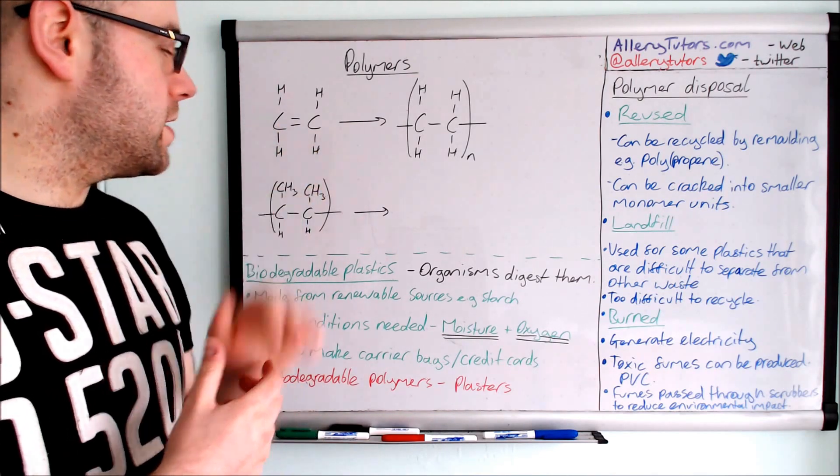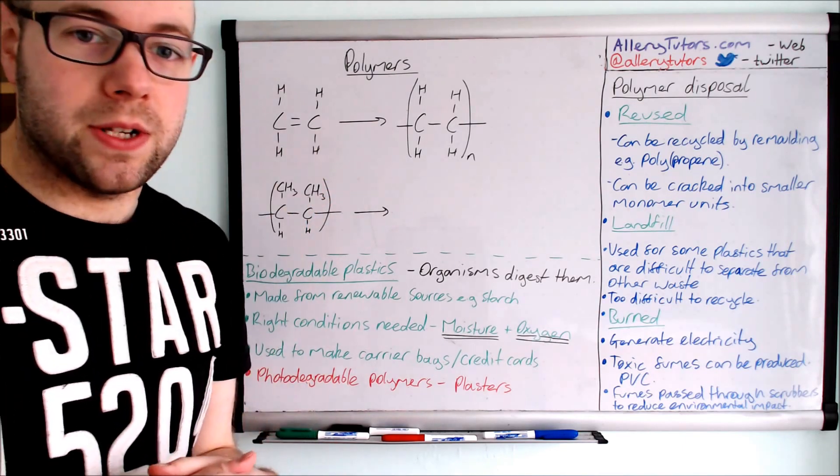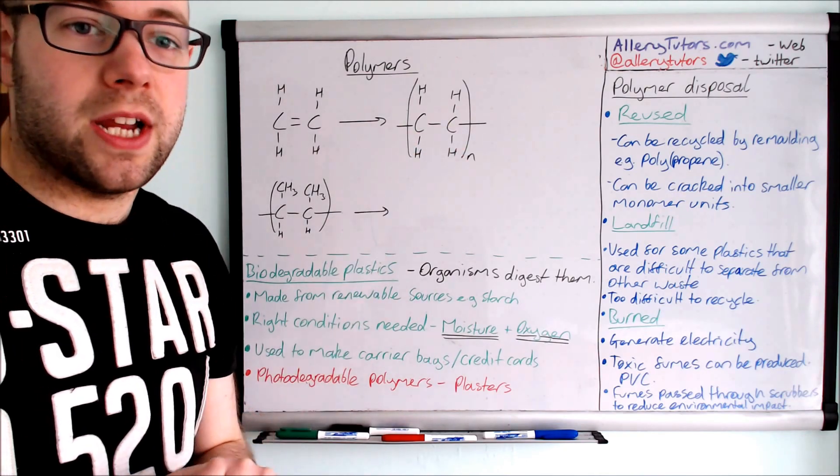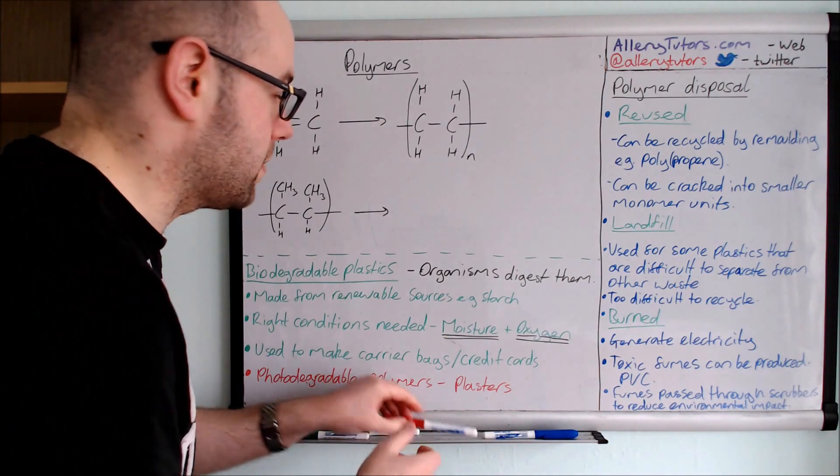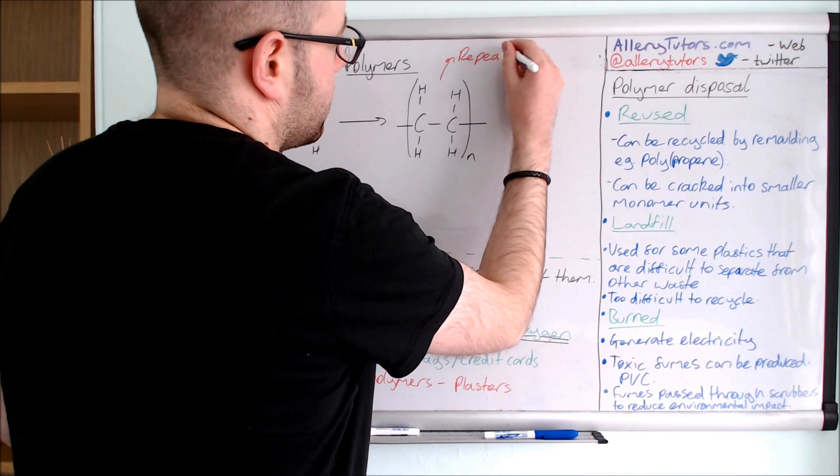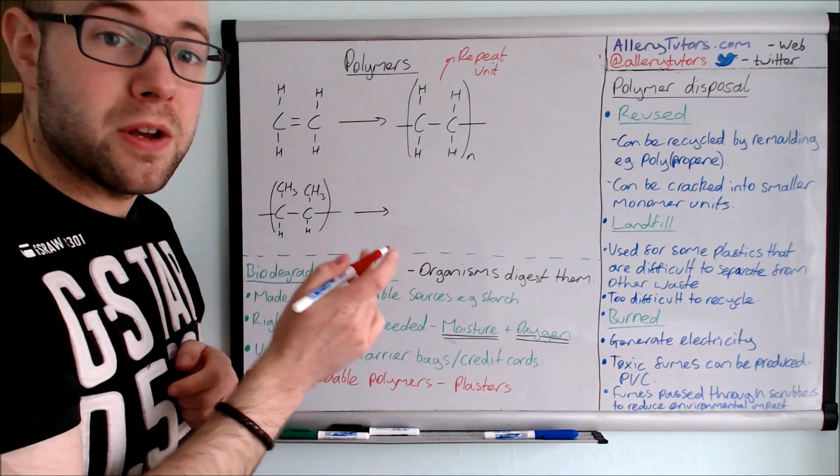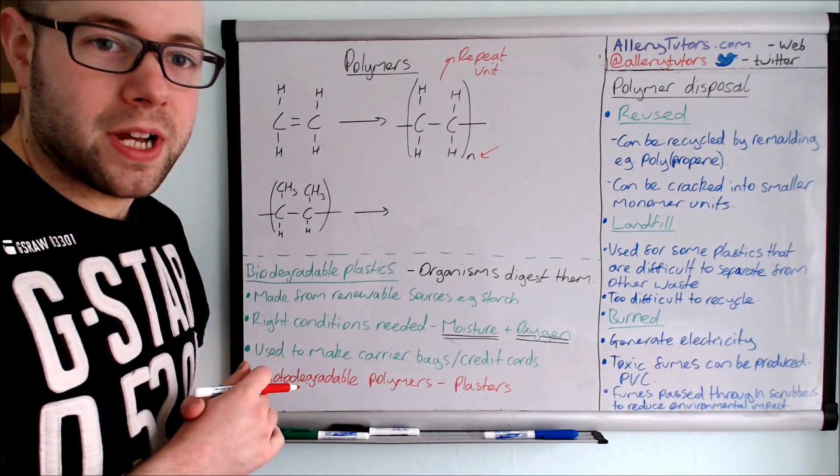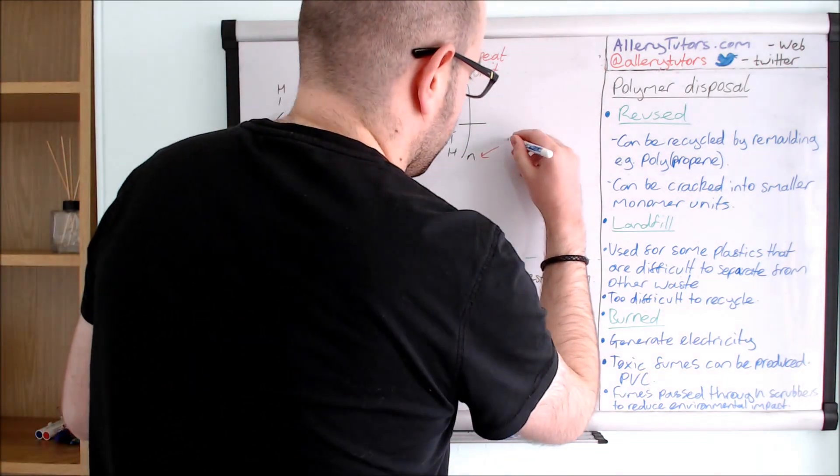We've got here ethene, which is this molecule here, C2H4. We can open this double bond up and form the polymer chain. Now this is a repeat unit, and this bit here is called the repeat unit. And this is basically the unit that repeats over and over again a number of times. And this N bit here tells us how many times, basically represents the number of times this monomer is repeated.